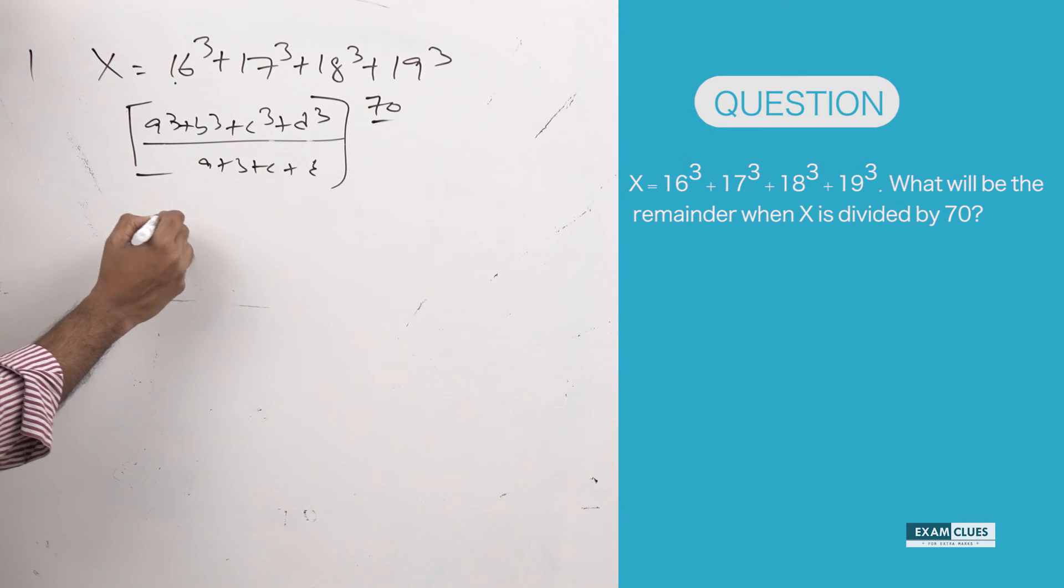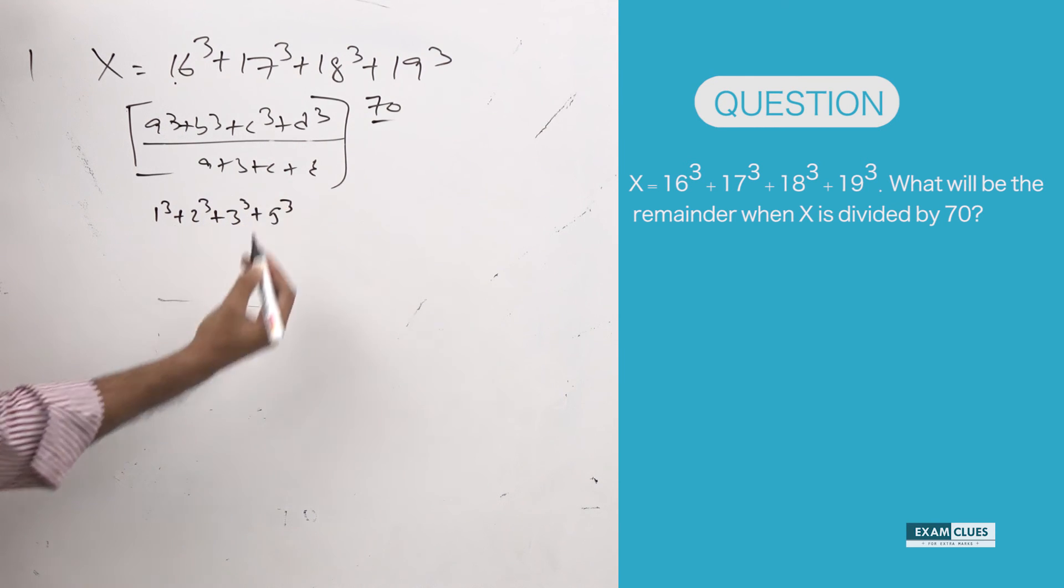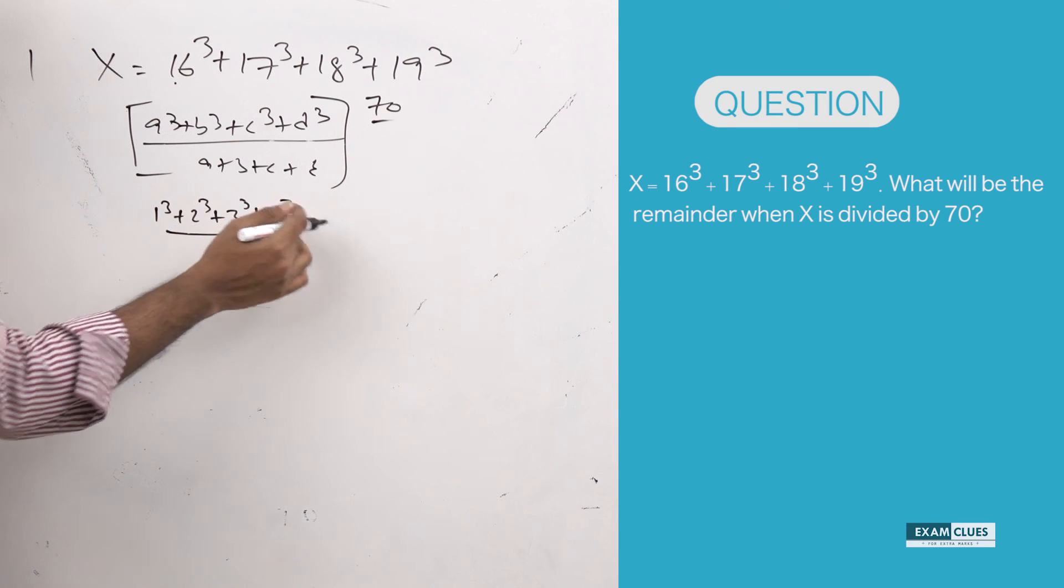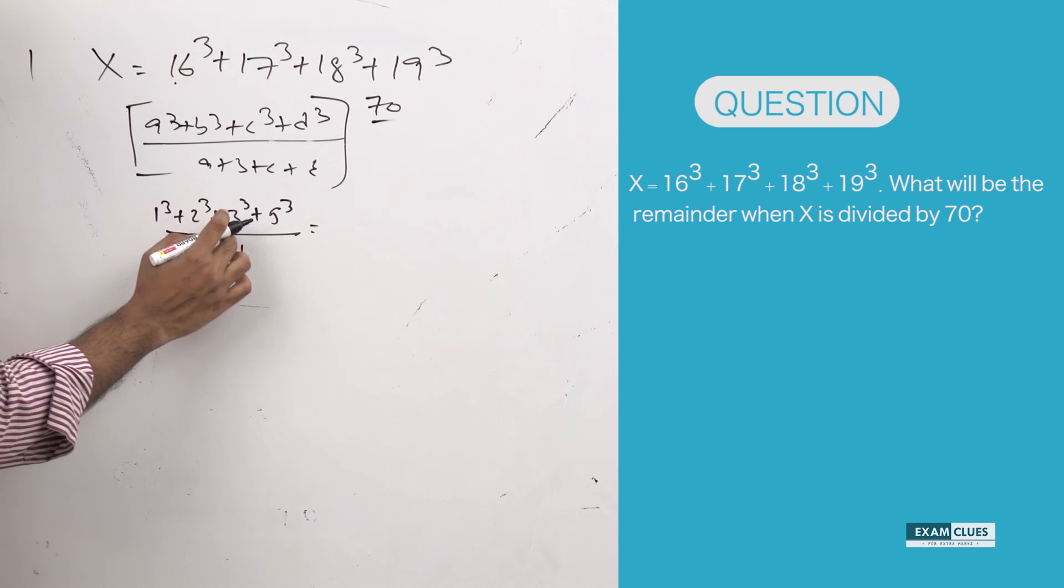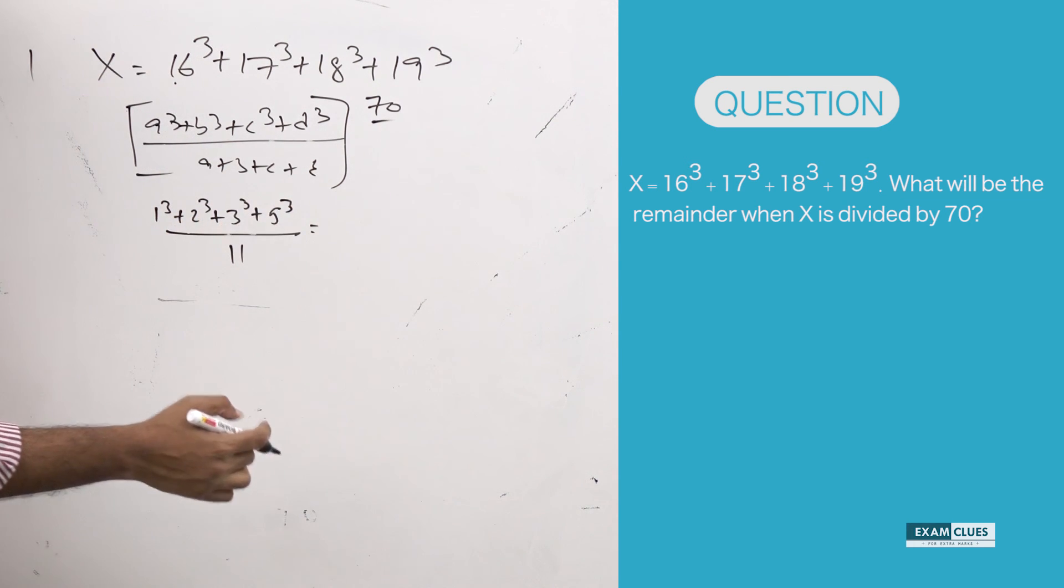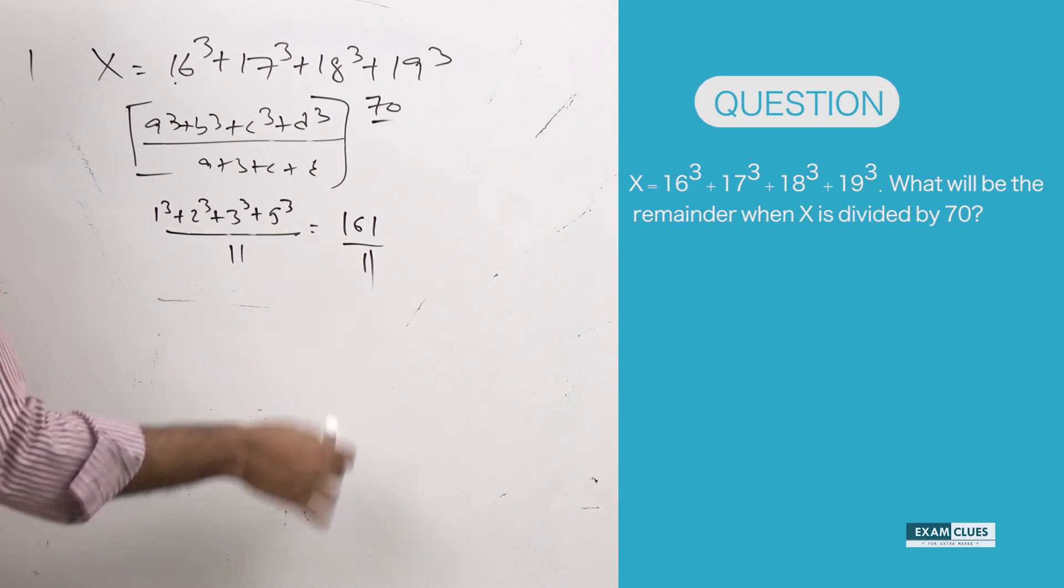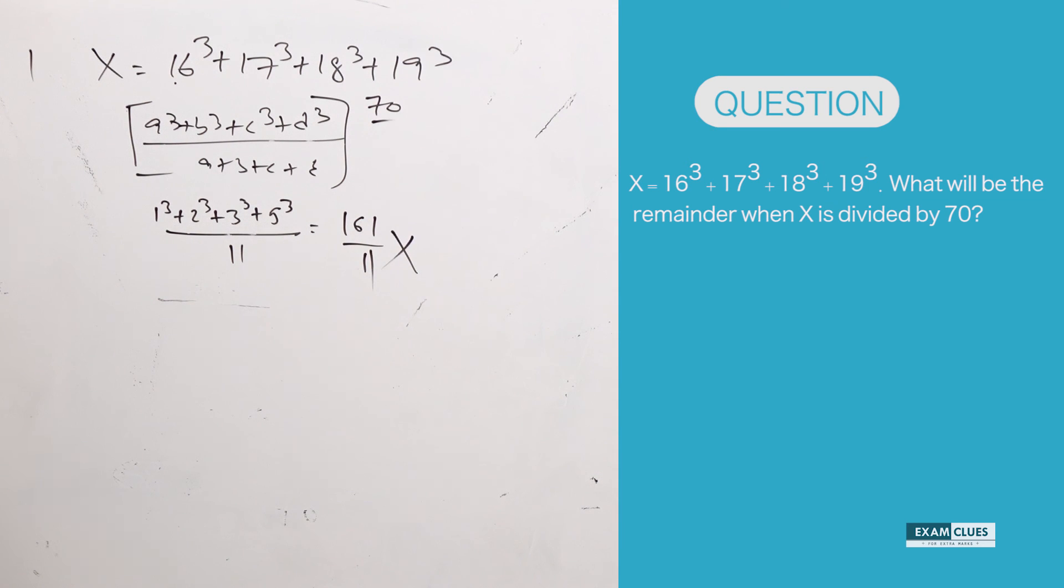Let me show one example so that you do not have that misconception. I am just taking 1 cube plus 2 cube plus 3 cube plus 5 cube and let us try to divide this by 1 plus 2 plus 3 plus 5, that is 11. 1 cube is 1, 8 plus 1 is 9, 9 plus 27 is 36, 36 plus 125 is 161 divided by 11. Is this divisible by 11? No.